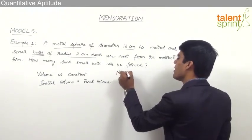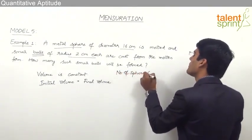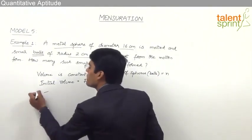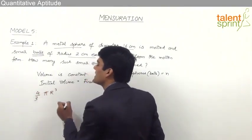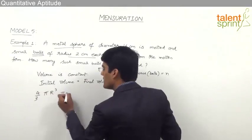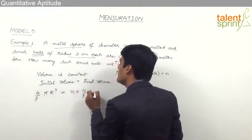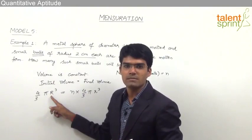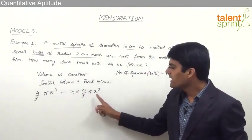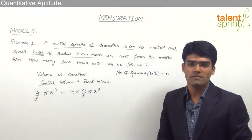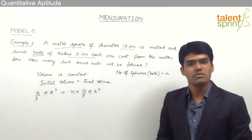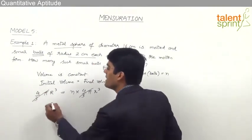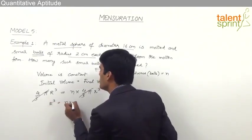Let us assume the number of spheres formed is equal to n. The total initial volume will be (4/3)πR³, the volume of the large sphere, and this should be equated to n × (4/3)πr³, where capital R is the radius of the larger sphere and small r is the radius of each small ball. By simplifying this equation, 4/3π cancels on both sides, giving us R³ = n × r³.